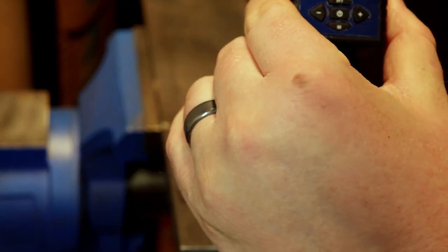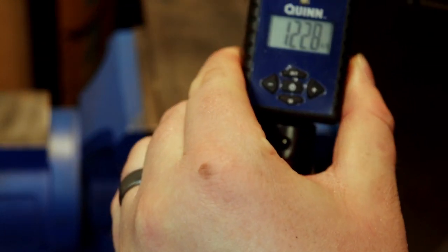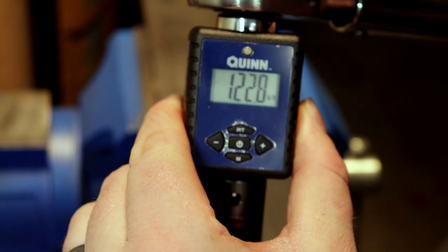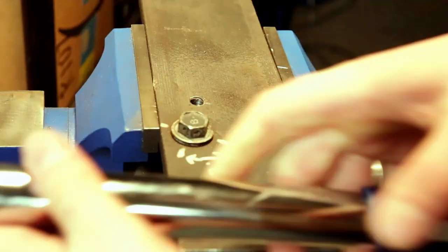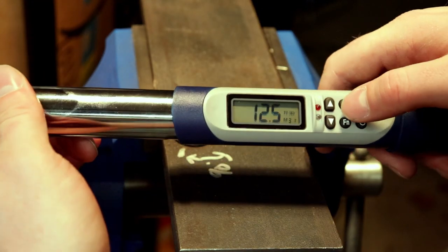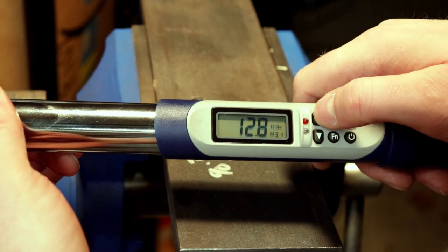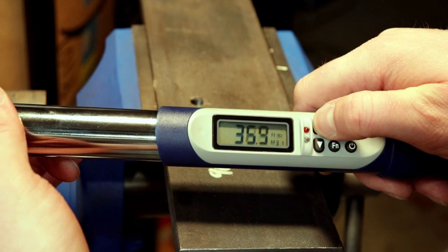There, 122.8. That's not too bad. Now we're going to take the Quinn and set this to 120 foot-pounds.